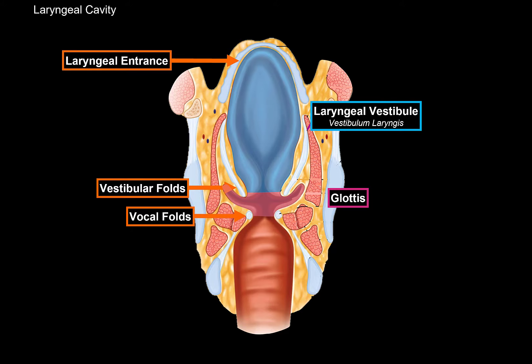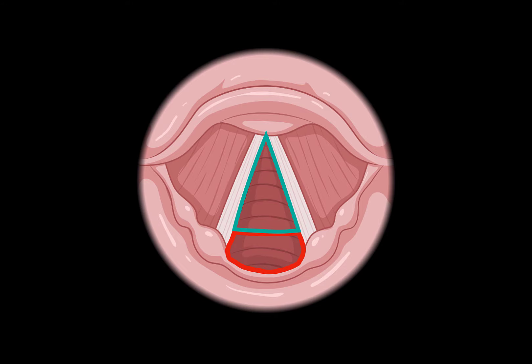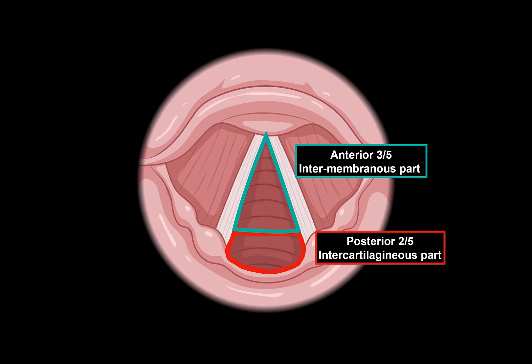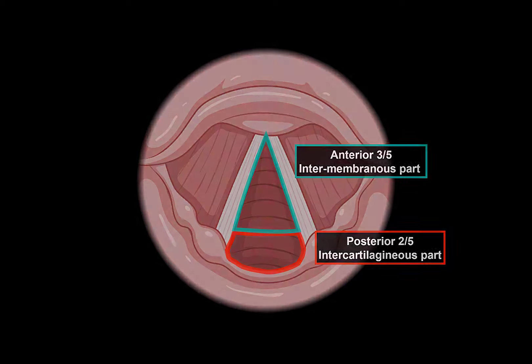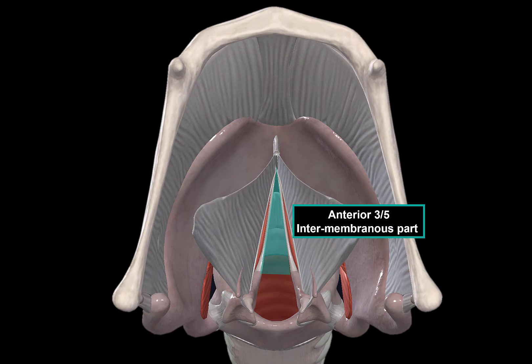There's an important thing to discuss here. The rima glottidis is divided into two parts based on the structures around it. The anterior 3/5ths is called the intermembranous part, since it's between membranes. The posterior 2/5ths is the intercartilaginous part, situated between the cartilages. Here we see that the anterior 3/5ths is between the membranes, and the posterior part lies between the cartilages, between the arytenoids.